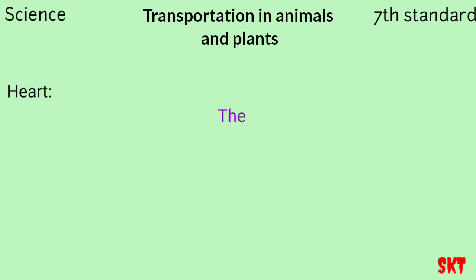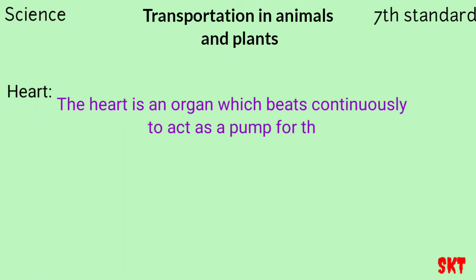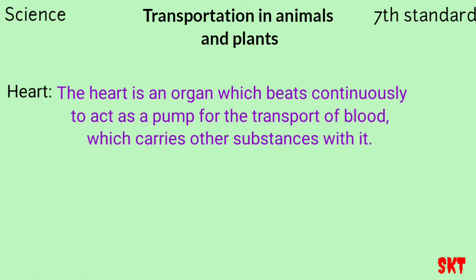The heart is an organ which beats continuously to act as a pump for the transport of blood, which carries other substances with it. Heart is a major organ — if the heart stops, you die. Since oxygenated and deoxygenated blood must not mix, our heart has four chambers. The two upper chambers are called atria and the two lower chambers are called ventricles. There is a partition between the chambers that helps separate oxygen-rich blood from carbon dioxide-rich blood.